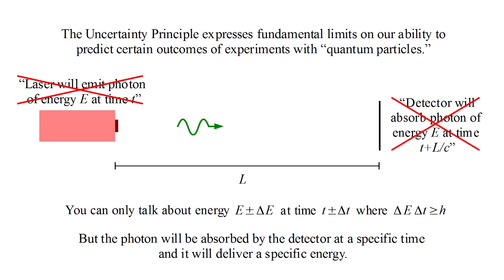The uncertainty principle doesn't mean that the photon will deliver a range of energies, whatever that would mean. It tells us our limitations in being able to predict what that energy will be.